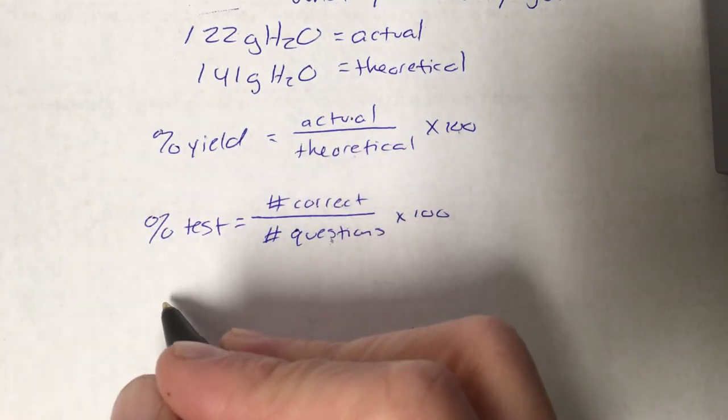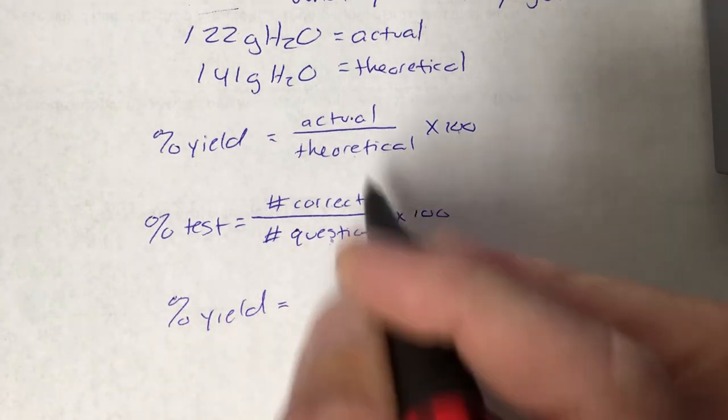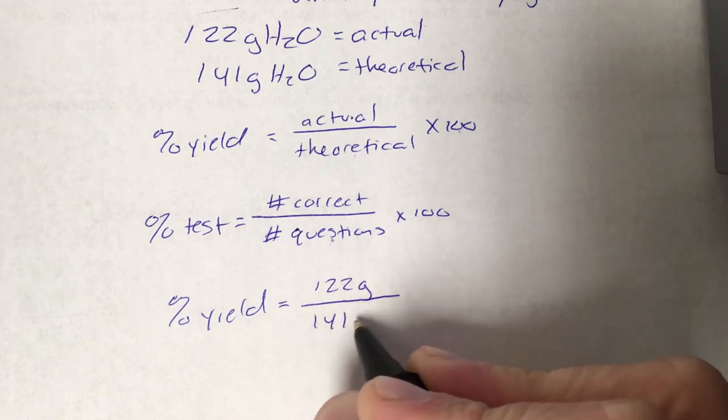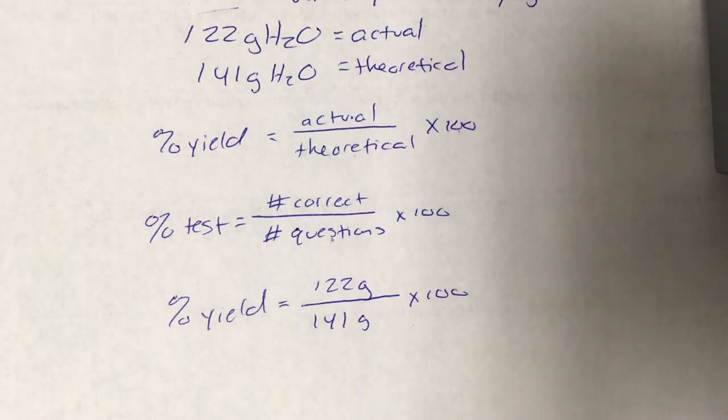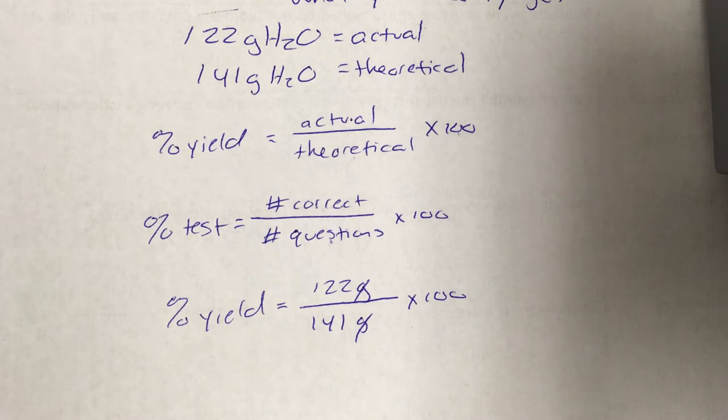So we do our calculation here. The percent yield is going to be equal to 122 over 141 times 100. Now these things are the same unit and they have to be the same unit so they'll cancel because there's no unit on a percent.